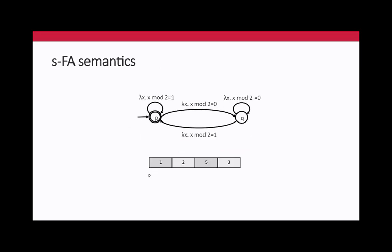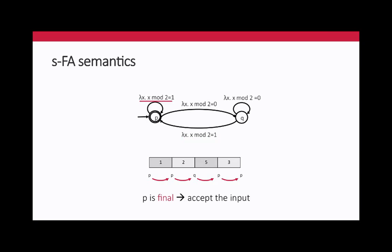Looking at semantics: this automaton accepts lists of integers — things in N*, not Σ*. The alphabet is infinite, but the representation is finite. I cannot accept this language using classic automata because I would need infinitely many transitions. Starting in an initial state, I read 1, which is odd, so I trigger the self-loop. Then 2 is even so I transition to the next state, and so on. The final state is accepting, so this sequence is accepted. This symbolic automaton accepts all lists of integers ending with an odd number.